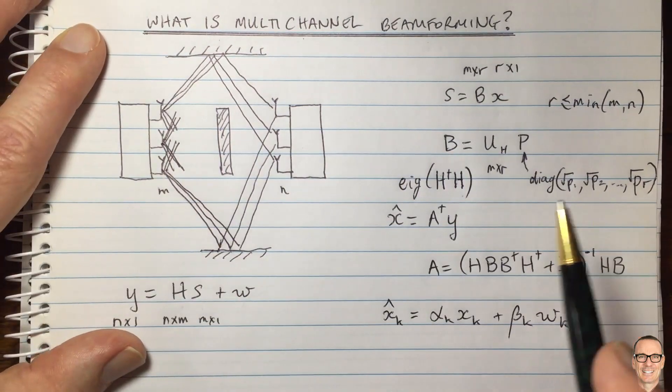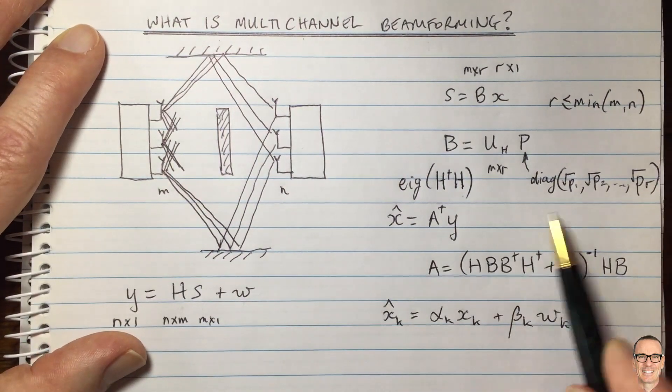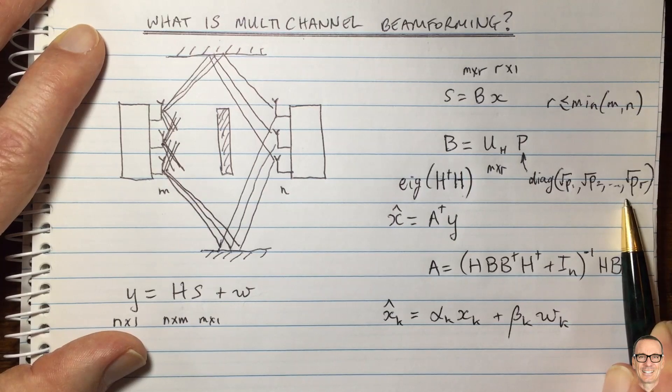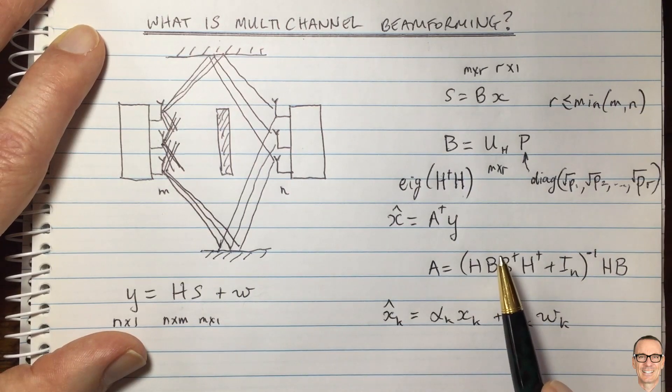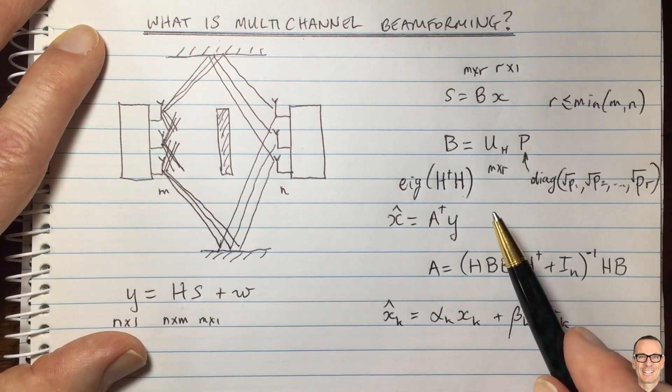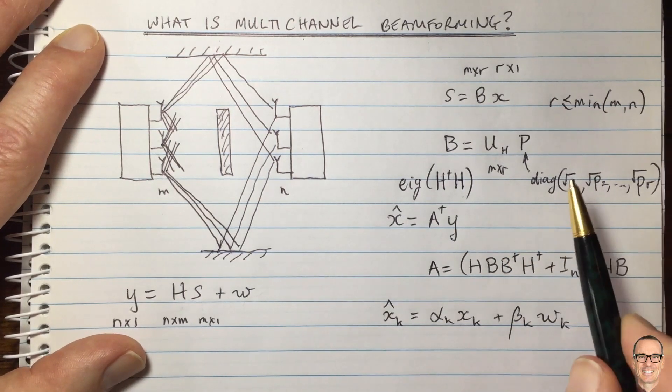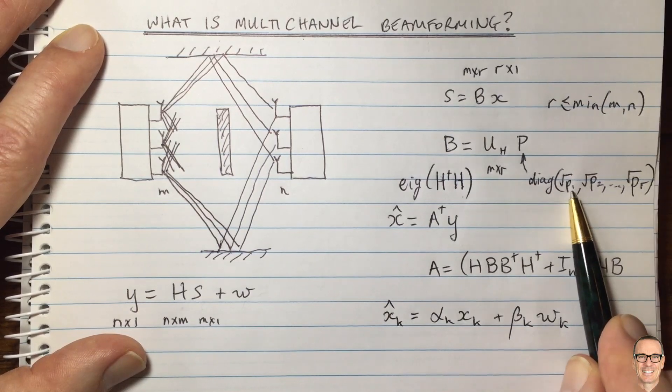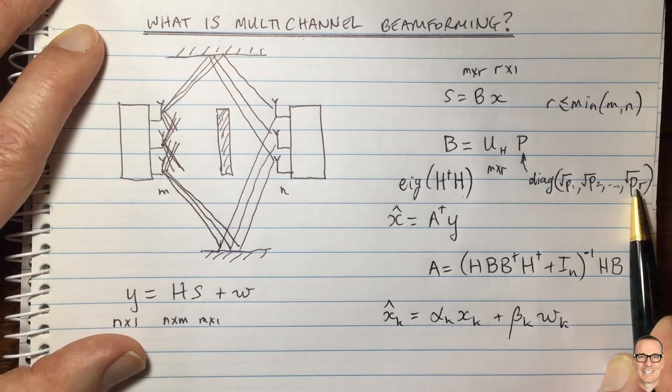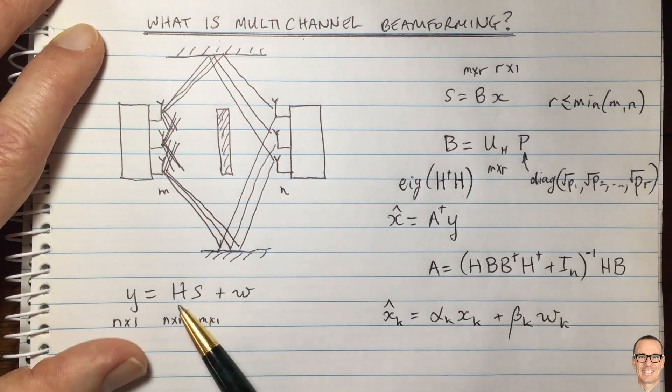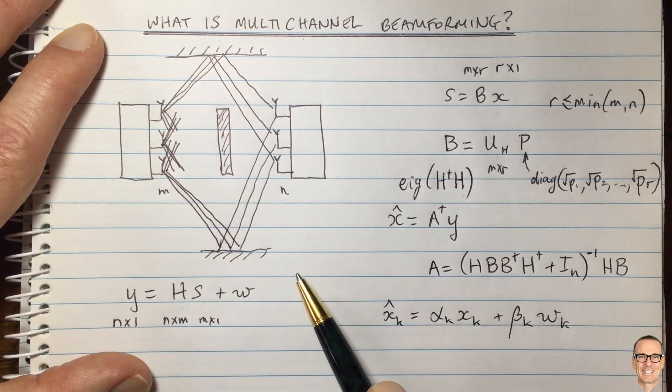The way to choose that is using water-filling, exactly the same way that we do water-filling across the frequency band. For a video on water-filling across the frequency band, check the description below this video. But this is exactly equivalent, and now we can do water-filling across the eigenspace for this multi-antenna communications channel.